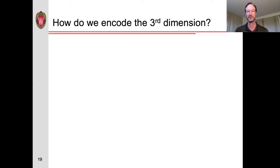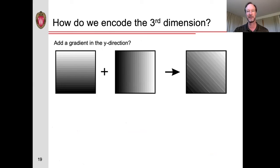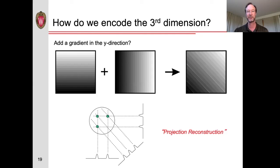So how do we encode the third dimension? If we apply two gradients at the same time, one in the x direction and one in the y direction, it just results in a new gradient in the x, y direction. So that just allows us to see where the signal is coming from along that axis. However, if we repeat this process multiple times and each time varying the x and y gradients, we can use these set of signals, each of which is essentially a projection of the image perpendicular to that axis to reconstruct the image, a technique that's called projection reconstruction.